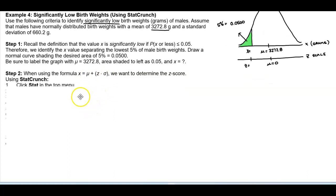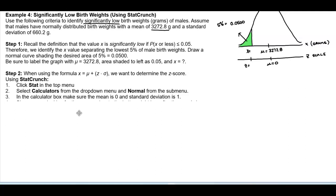So we're going to use StatCrunch. So the guidelines for StatCrunch: number one, we're going to click Stat in the top menu. Number two, select Calculators from the drop down menu and Normal from the sub menu. Number three, in the calculator box make sure the mean is zero and the standard deviation is one.